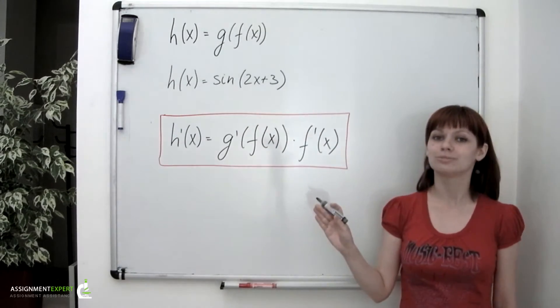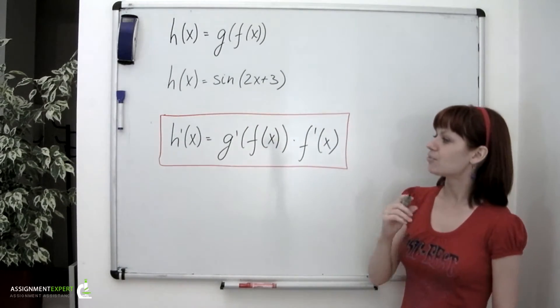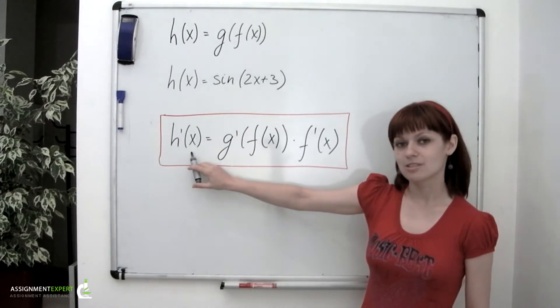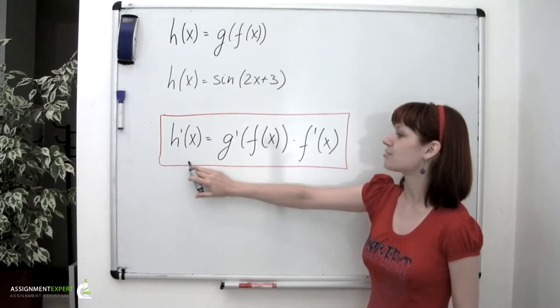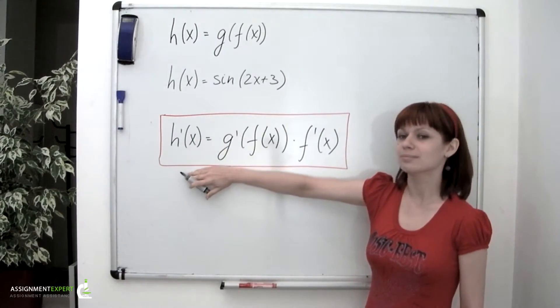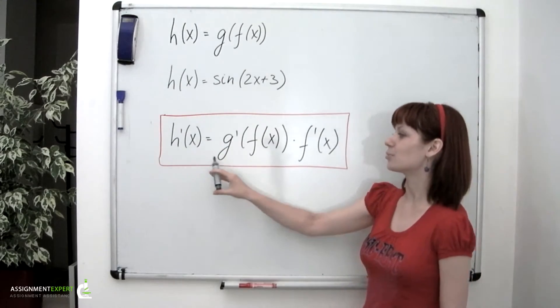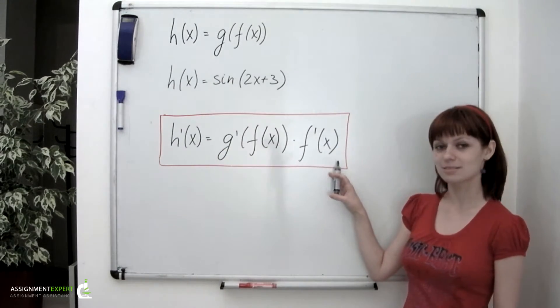Now back to chain rule. It states that if we're dealing with a composition of functions, we can find its derivative by the following formula. h prime of x equals g prime of f of x times f prime of x.